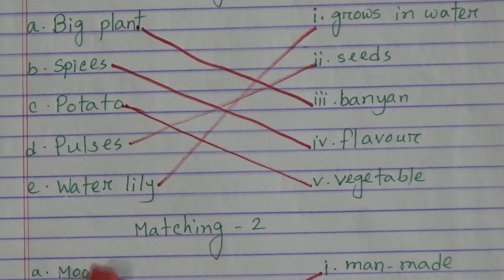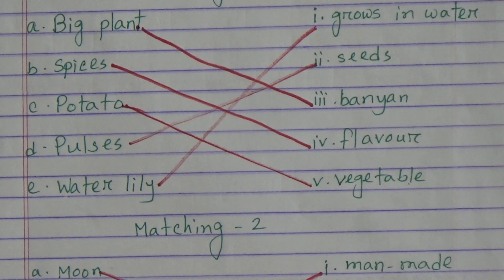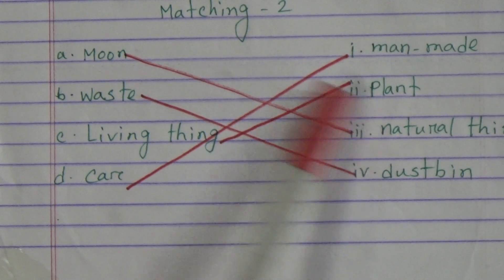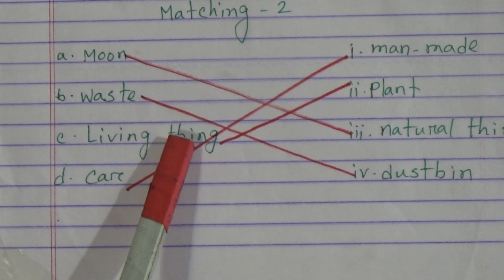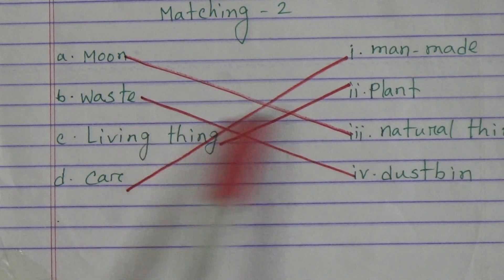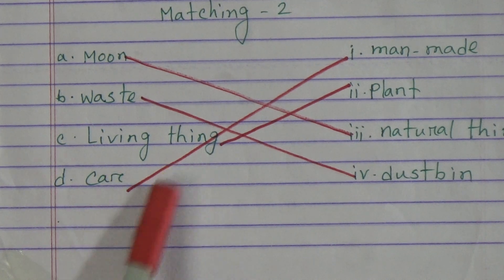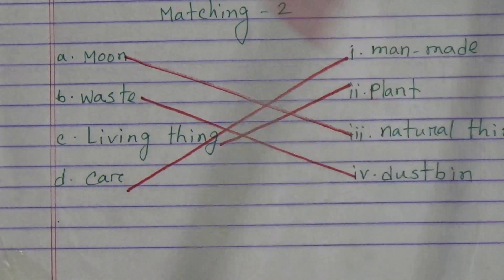Repeating Matching 2. Moon will be matched with natural thing — A matched with number 3. Waste will be matched with dustbin — B matched with number 4. Living thing will be matched with plant — number C matched with number 2. Car is a man-made thing — D matched with number 1.